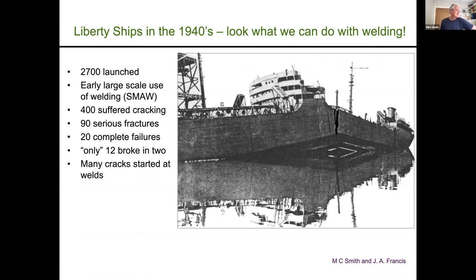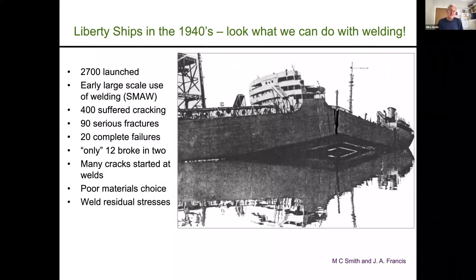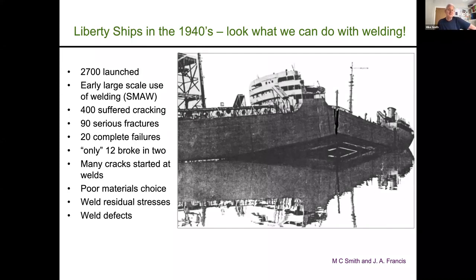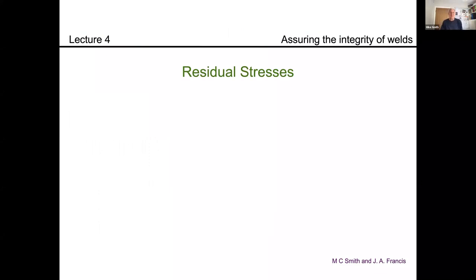Of those 2,700, about 400 suffered cracking of one sort or another. There were something like 90 serious fractures, 20 complete failures, and only 12 broke completely in two. Many of the cracks started at welds, due to a poor choice of steel prone to forming brittle phases in the heat affected zone, weld residual stresses, and weld defects — all the nasty things you can find if you don't make and inspect the weld carefully. Despite those failures, Liberty ships were deemed a big success because they were built faster than they could be sunk.